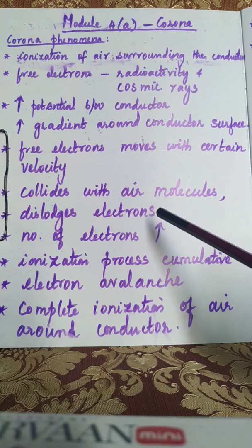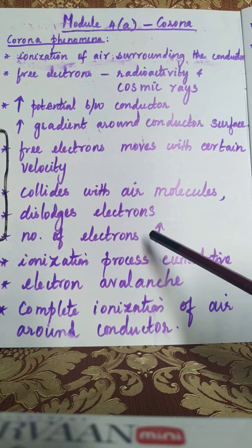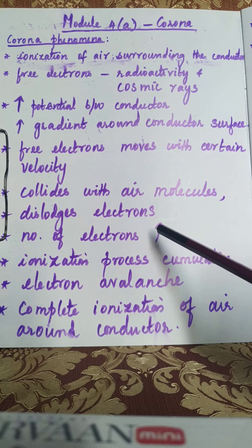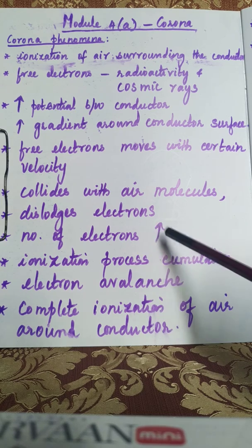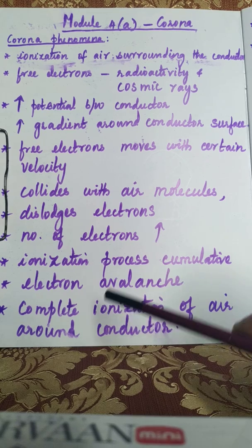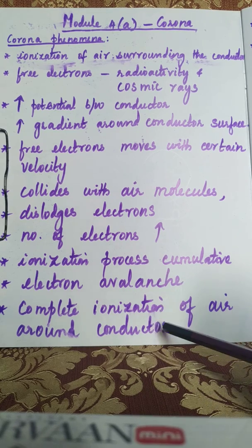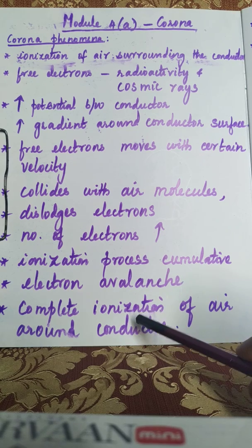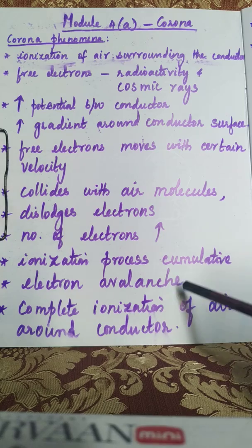As a result, more and more electrons will be liberated in the air — the number of electrons keeps on increasing. This ionization process is cumulative; it's an electron avalanche. After a certain time, the complete ionization of the air surrounding the conductor happens, and this complete ionization of air surrounding the conductor leads to corona.